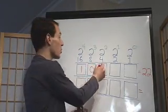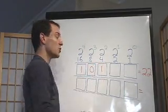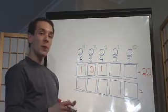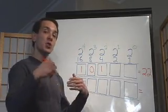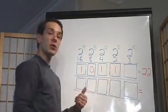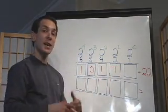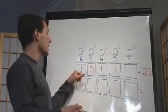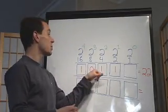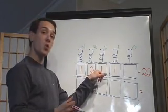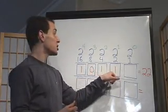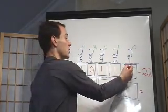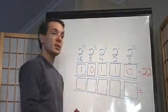I do need a 4, though. So remember, I had 6 — I just used up 4 of them, so there's 2 left. So there's a 2 there as well, and that gives me 22. Check it: 16 plus 4 is 20, plus 2 is 22, which means I don't need any of the 1s.